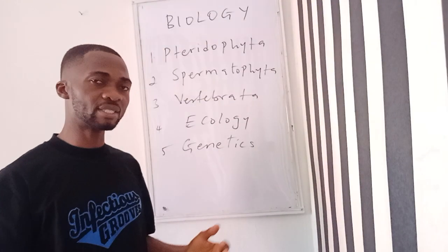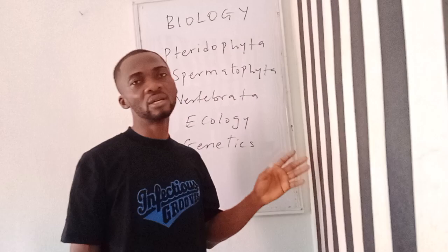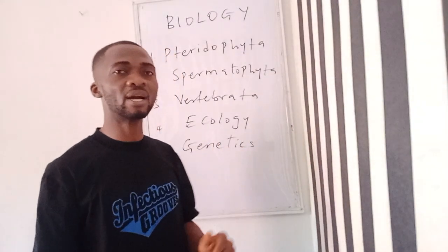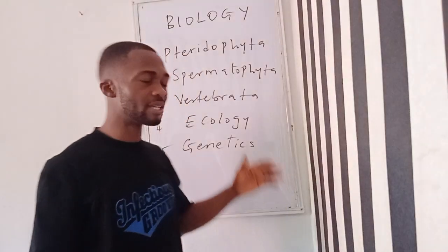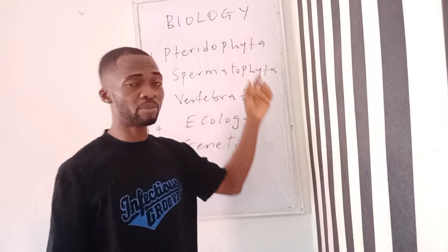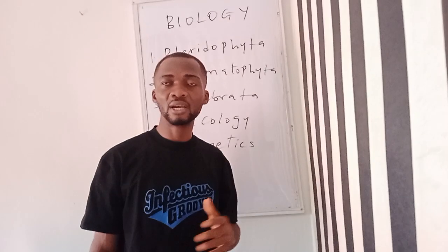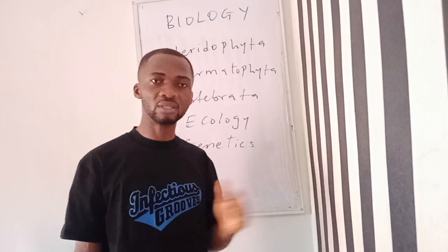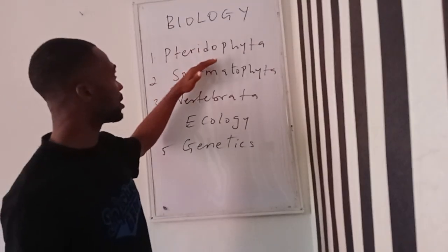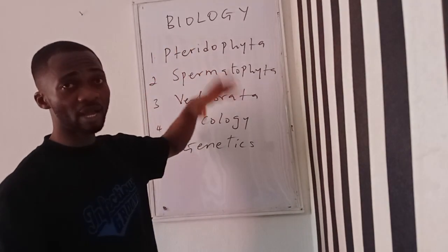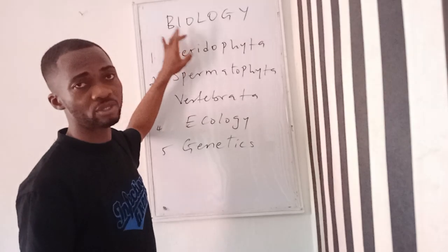We talked about three different categories of lower plants: Schizophyta — which have bacteria and blue-green algae — then Thallophyta, which have algae and fungi, and then Bryophyta, where we talked about examples like mosses, liverworts, and the rest of them. For this group, we'll be talking about the higher plants, the first group being Pteridophyta.